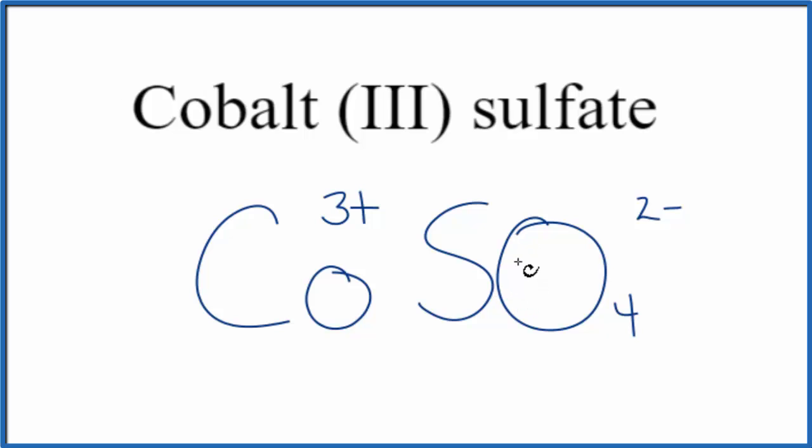So either you've memorized this, or if you're allowed, you can look it up on a table of polyatomic ions. Since we have a metal here and a group of nonmetals, we have an ionic compound, and that means these charges, they need to add up to 0. We need to have a net charge of 0.